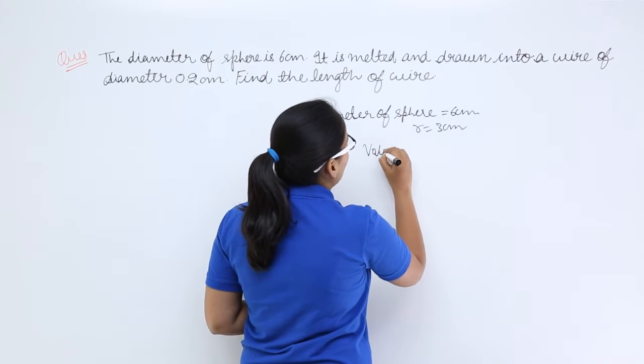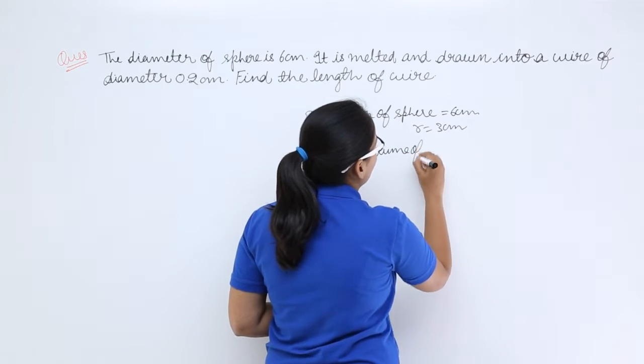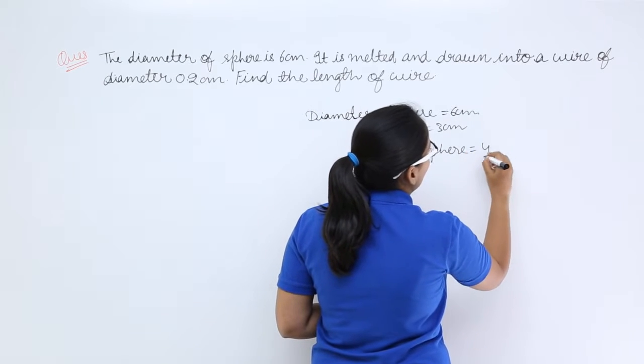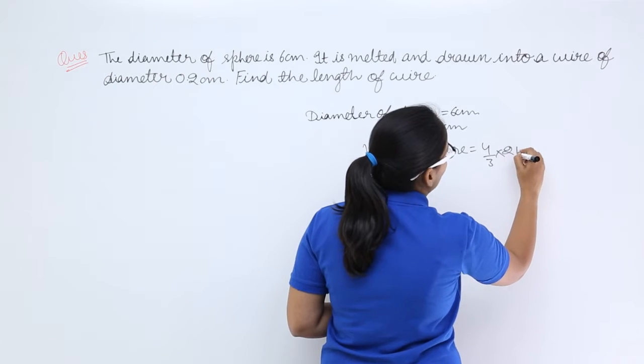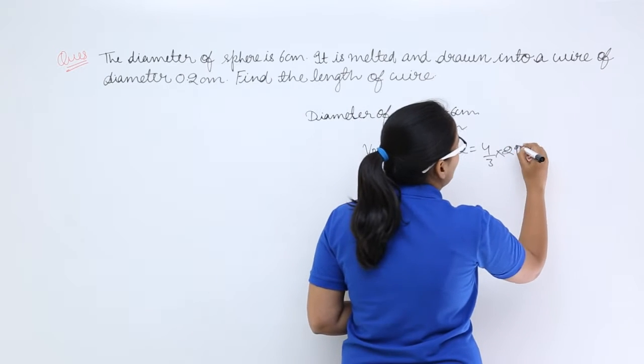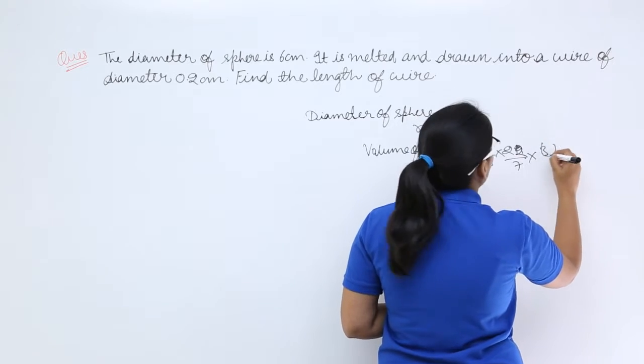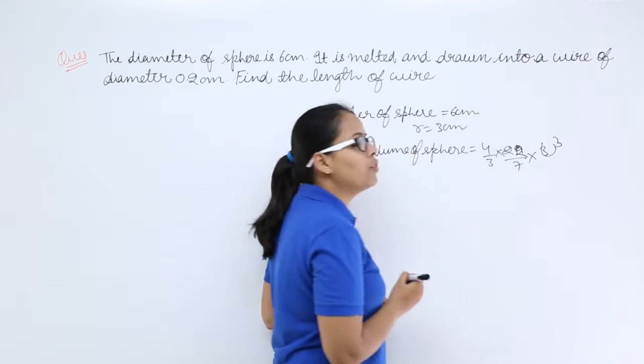Now let's calculate the volume of sphere. Volume of sphere will be 4/3 of π r³, and you can write π as 22/7, and your radius is 3, so this will be 3³.